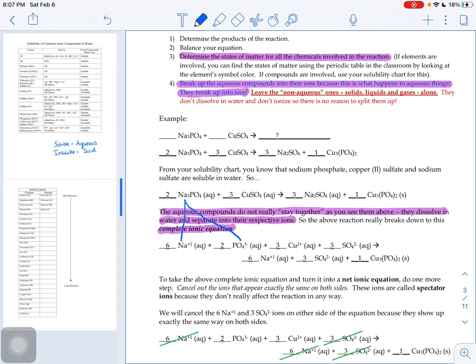If they're ions, they have a charge. We're doing a complete ionic equation, so we can't just say Na and that's all. We have to say what the charge on that sodium ion is.